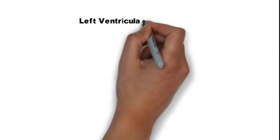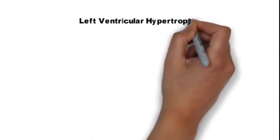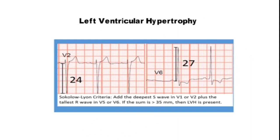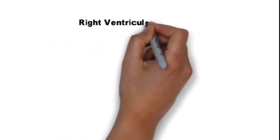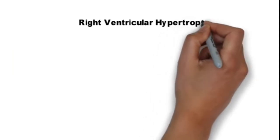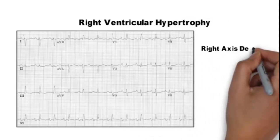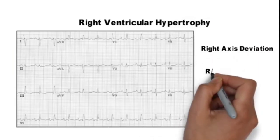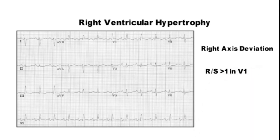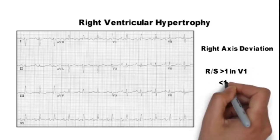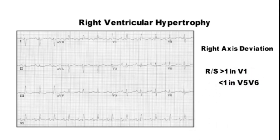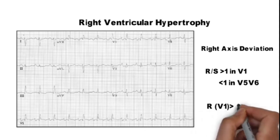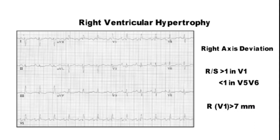In left ventricular hypertrophy, the deepest S wave in V1 or V2 added to the tallest R wave, if the sum is greater than 35 mm, indicates LVH. Whereas in right ventricular hypertrophy, there will be right axis deviation, RS ratio greater than 1 in V1 and less than 1 in V5 or V6, and R wave in V1 greater than 7 mm - indicating RVH.